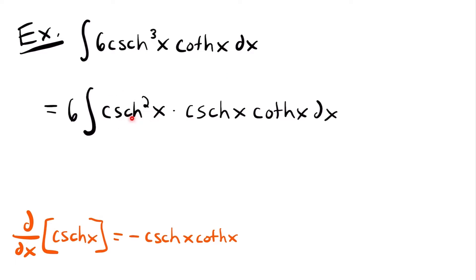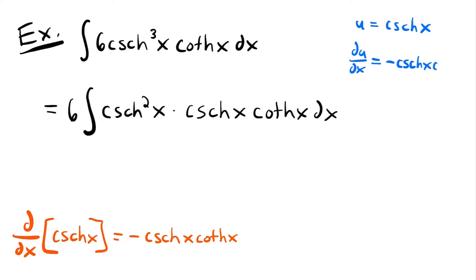Now we have hyperbolic cosecant that we can replace with u, and its derivative is right there. If we set u equal to hyperbolic cosecant x, then hyperbolic cosecant squared x becomes u squared. Then du/dx equals negative hyperbolic cosecant x times hyperbolic cotangent x, and solving for du gives: du equals negative hyperbolic cosecant x times hyperbolic cotangent x times dx.